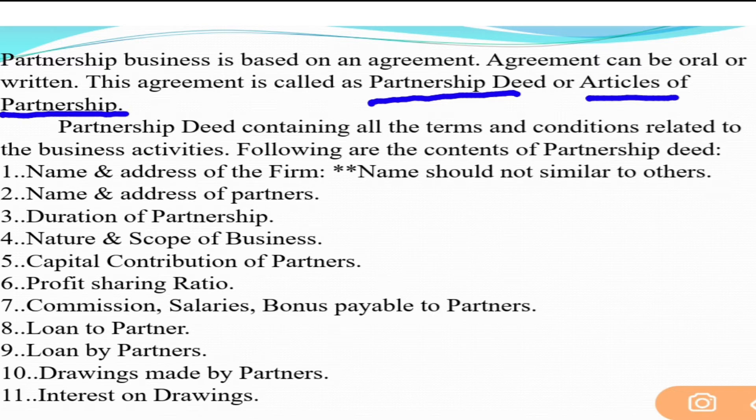Articles of partnership is another name for partnership deed — it is not a different concept, just another name for the same agreement decided among partners. If any term has a second name suggested, we look at it with the same meaning. Partnership deed contains all the terms and conditions related to the business activities — these are the contents of the partnership deed.